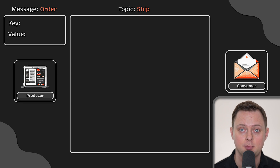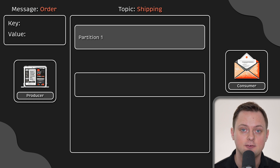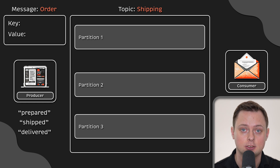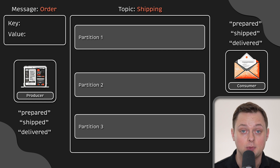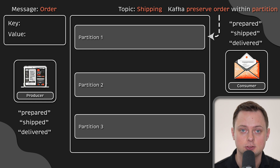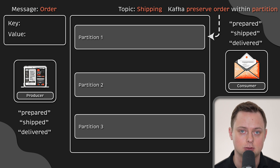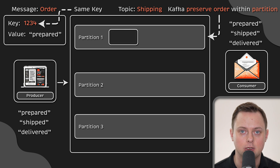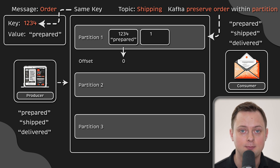Let's talk about best practices for choosing the key for the message. If the ordering of messages matters to you, then the key is important. For example, if you have a Kafka topic where you want to send order statuses and you receive several status updates about the same order — such as prepared, shipped, and delivered — you want to make sure the application consumes these statuses in the correct order. Kafka only guarantees to preserve order within a single partition. One way to achieve this is to use the same key for all those messages and the default partitioner. In our example, using the order ID as a message key makes perfect sense.